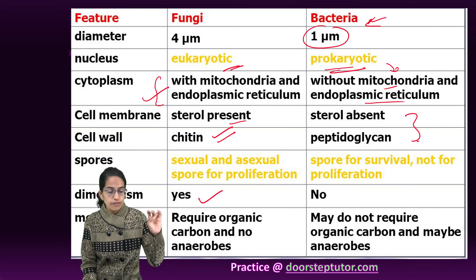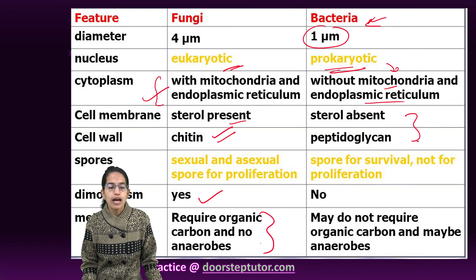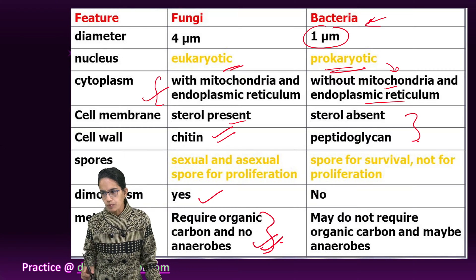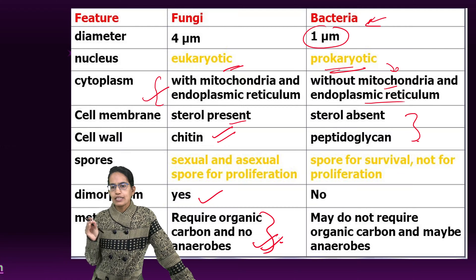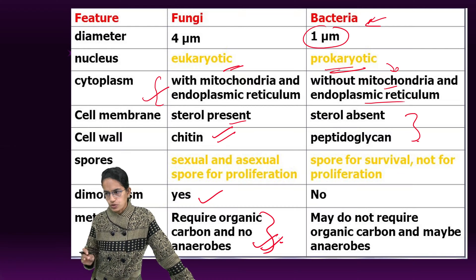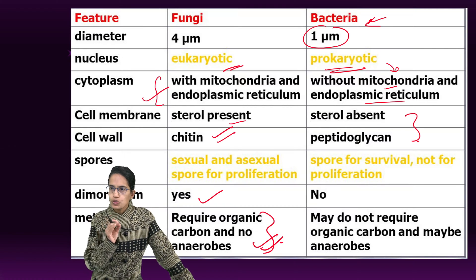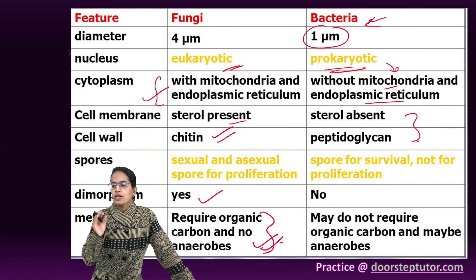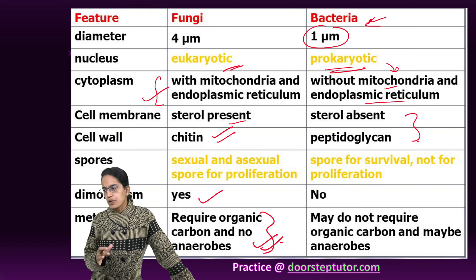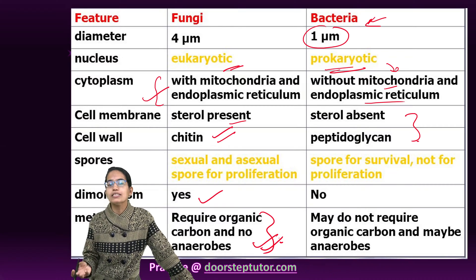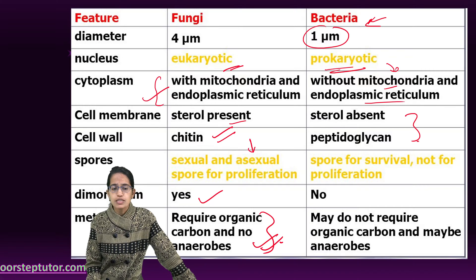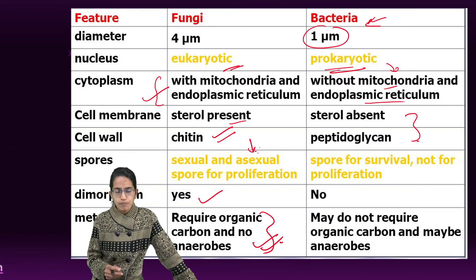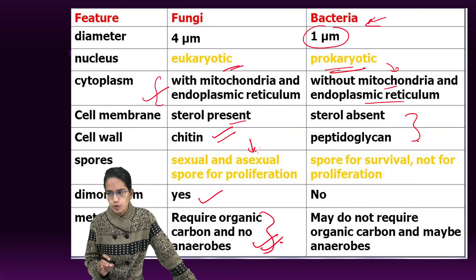Fungi require carbon and are not anaerobes for metabolism. Bacteria are unicellular and are autotrophic as well as heterotrophic. Fungi are extremely heterotrophic and have extracellular digestion. In fungi, asexual reproduction happens by budding, branching, and spore formation. Sexual reproduction occurs by conjugation. There is also endospore or spore formation in fungi.